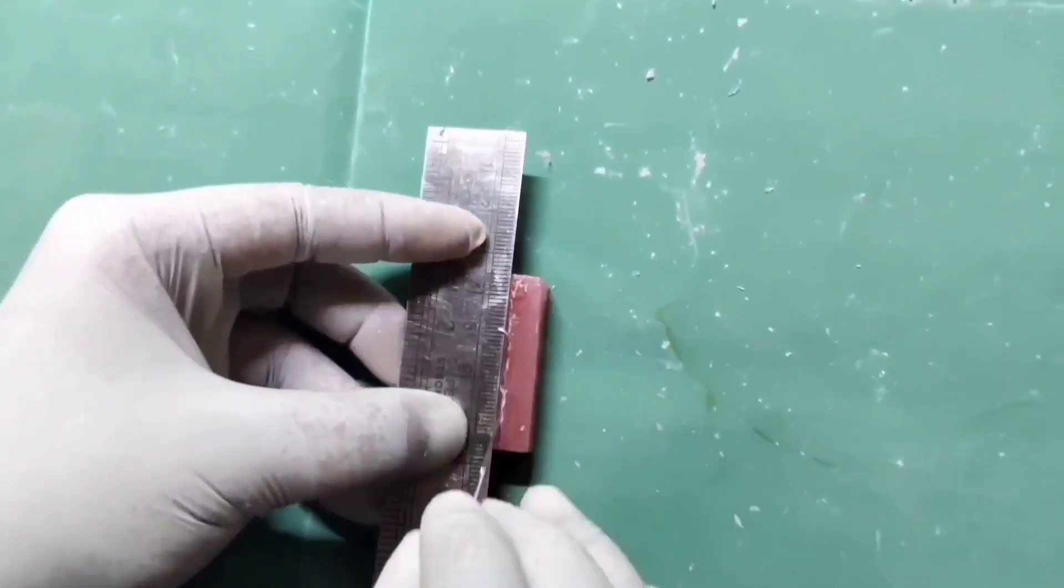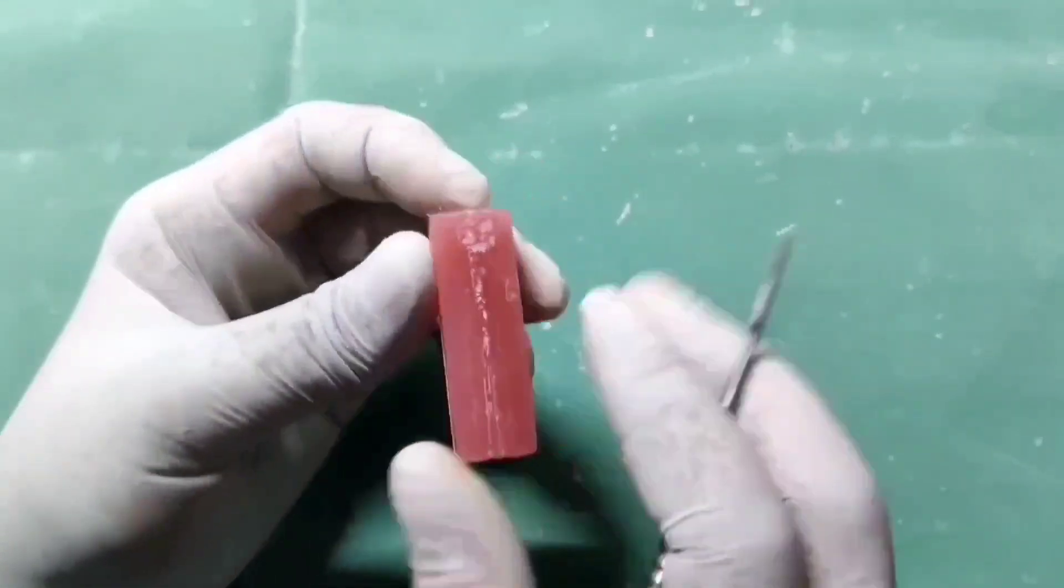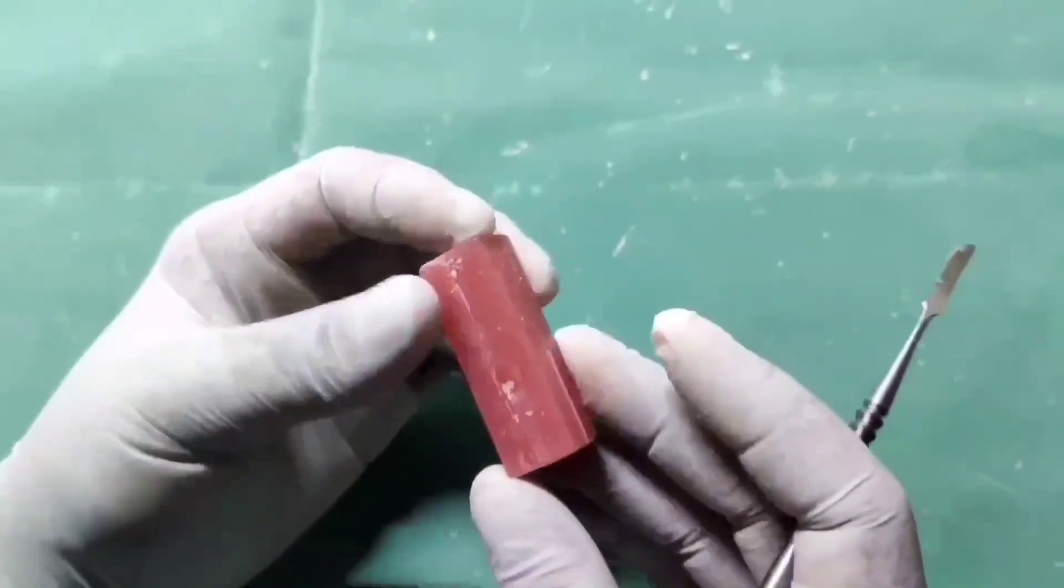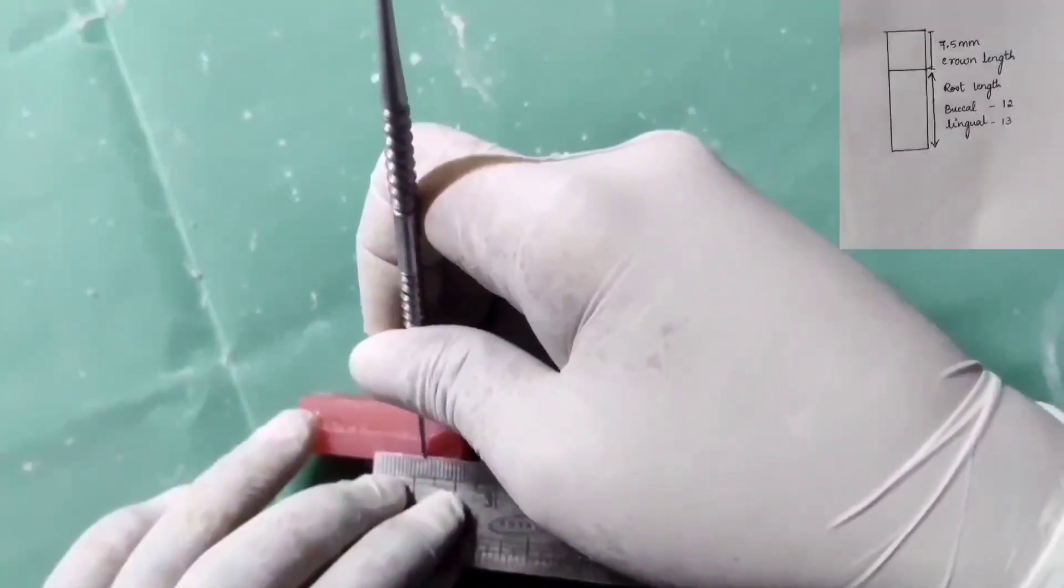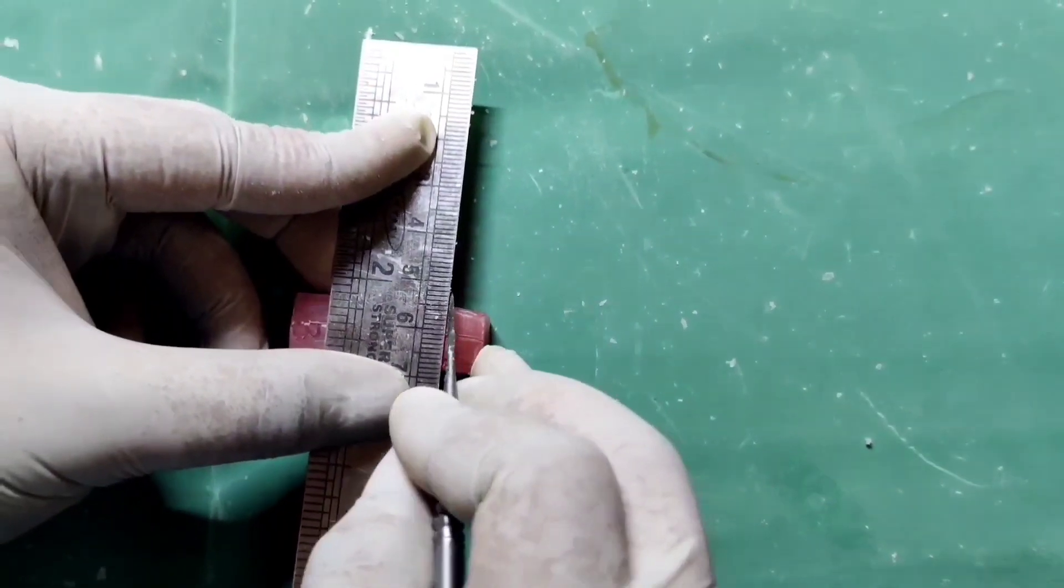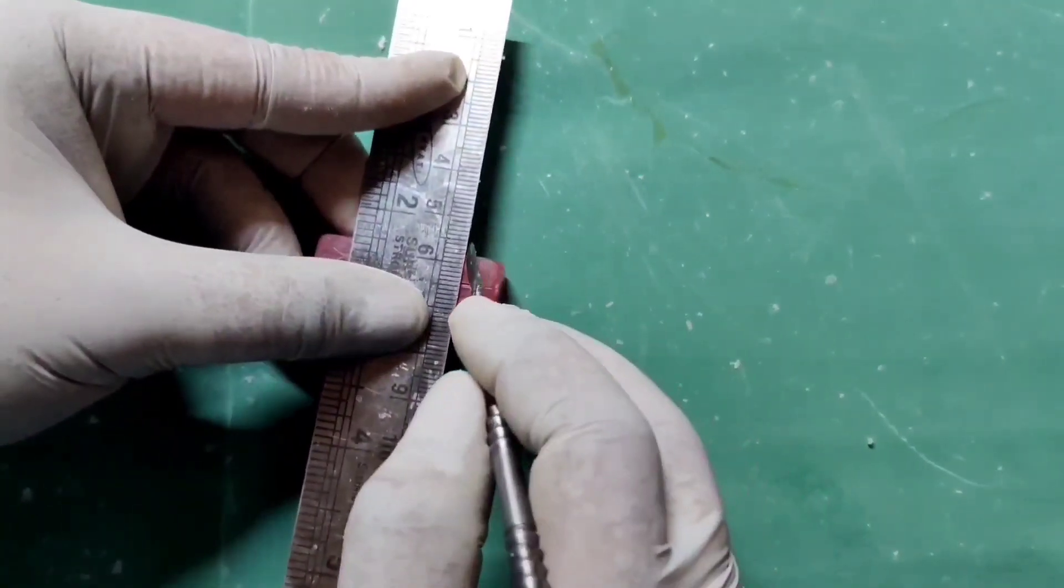Now we will start drawing the midline on all four aspects. Let's start marking the crown and root length. Length of the crown is 7.5mm. Length of the root, buccal is 12mm, lingual is 13mm.